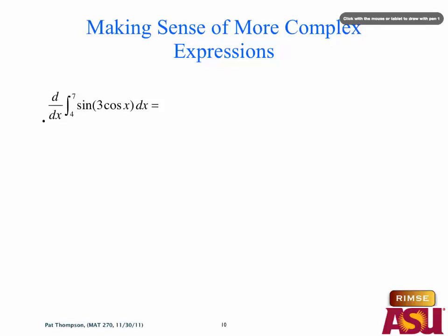If this was indeed the G prime of F, there'd also have to be something else — some factor of negative sine — which we don't have, it's not there. So this is not undoing the chain rule; it doesn't fit the form of a result of the chain rule because it's missing the derivative of the inside.